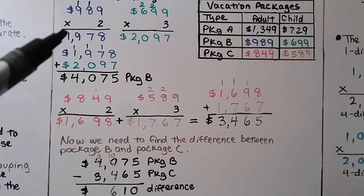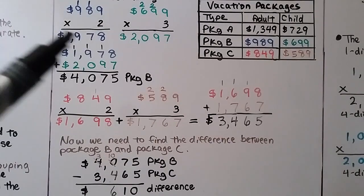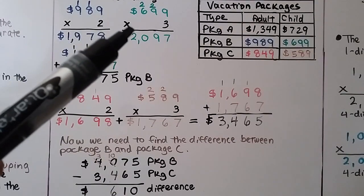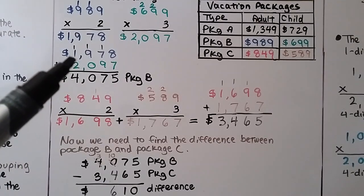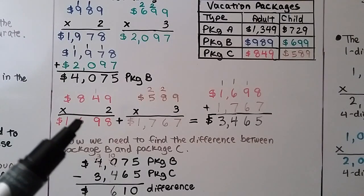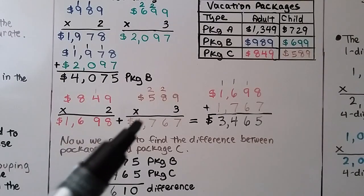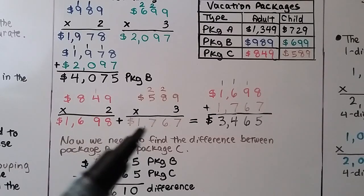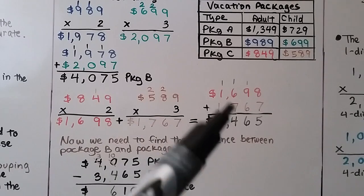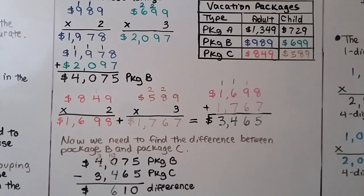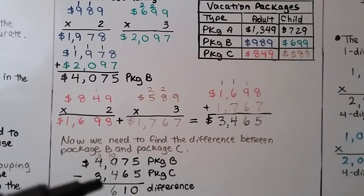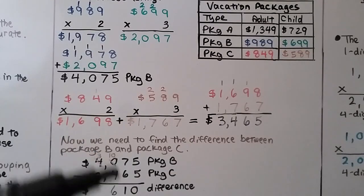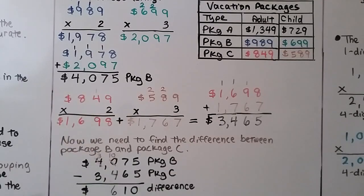We needed to multiply for the adult prices, multiply for the children's prices, then add them together for package B; then multiply for the adult and children's prices again for package C, add them together, and finally subtract one total from the other to find the difference between the two packages.